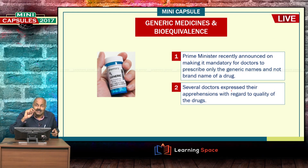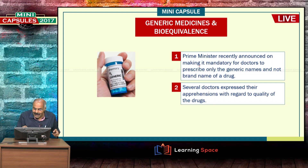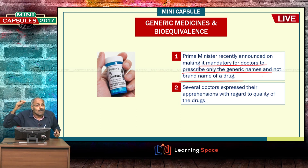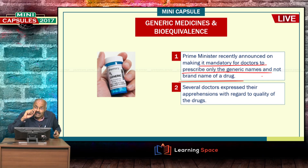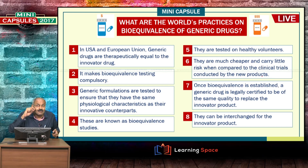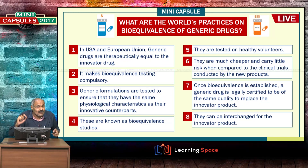Regarding generic medicines and bioequivalents, the Prime Minister recently stated that it is mandatory for doctors to prescribe only the generic names and not the brand name of a drug. Several doctors expressed apprehensions with regard to the quality of generic drugs. Under these circumstances, what is the world practice as far as bioequivalence of generic drugs is concerned?